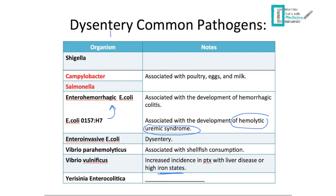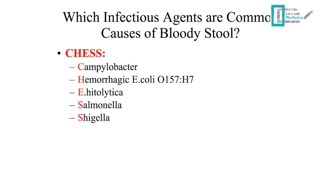Dysentery is mostly caused by gram-negative rods. A useful mnemonic for organisms causing bloody stool is CHEST: C for Campylobacter, H for Hemorrhagic E. coli, E for Entamoeba histolytica, S for Salmonella, and S for Shigella.